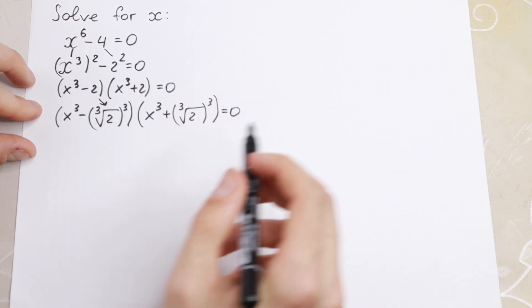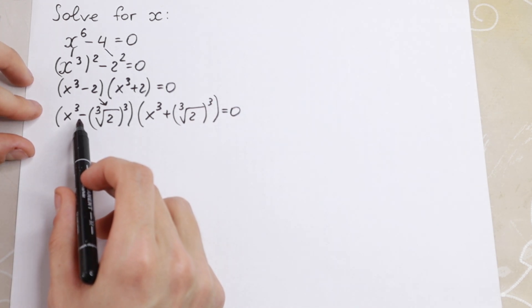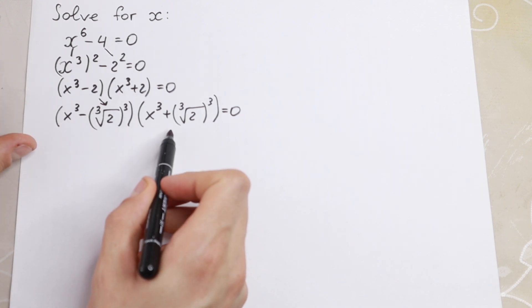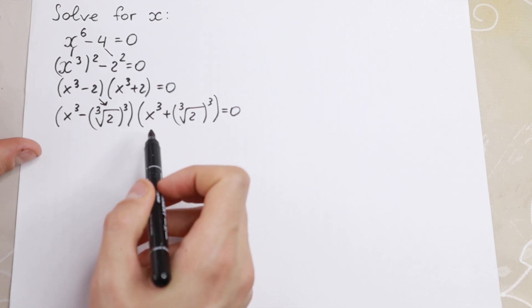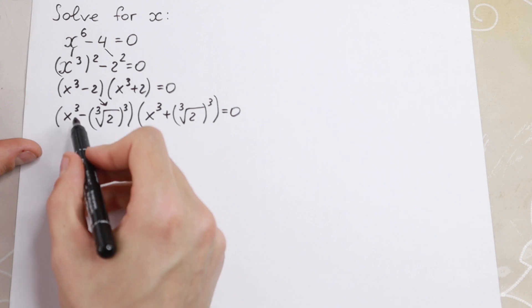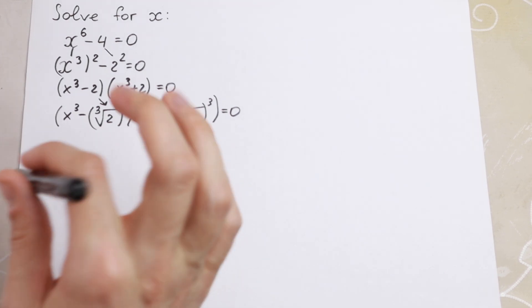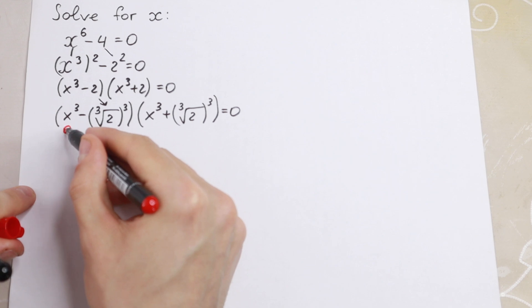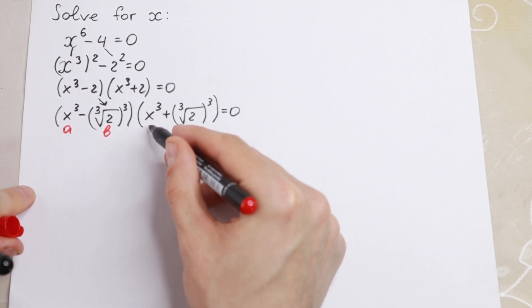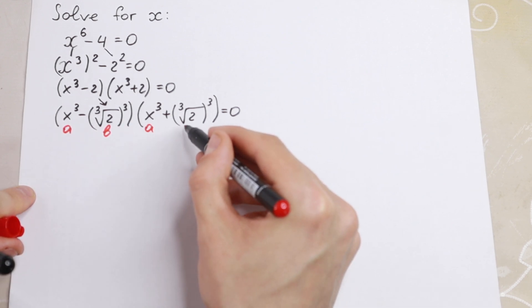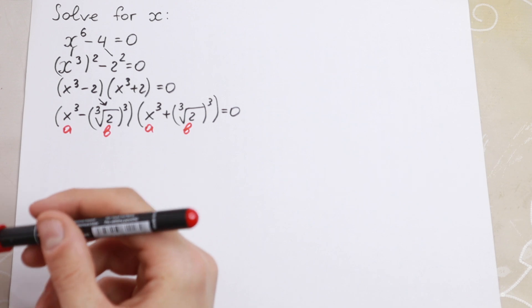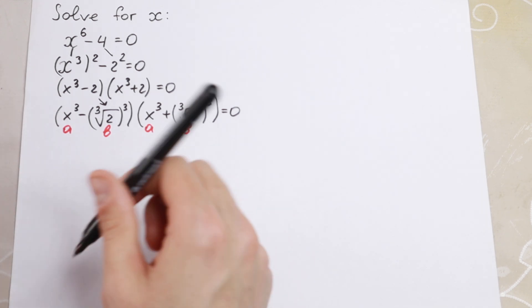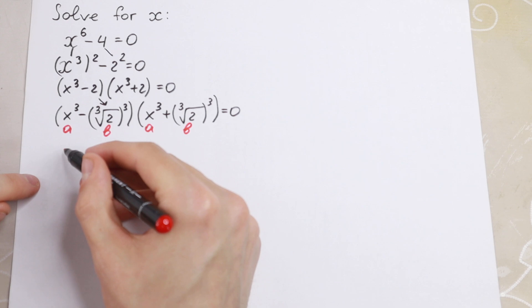So what we will have: right here we will have a difference of two cubes, and right here we will have the sum of two cubes. Here this is our a and this is our b. So we need to know the formula for difference of cubes and the sum of cubes.